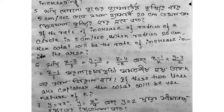If the rate of increase of the radius of a circle is 5 cm per second and the radius is equal to 20 cm, then what will be the rate of increase in its area?